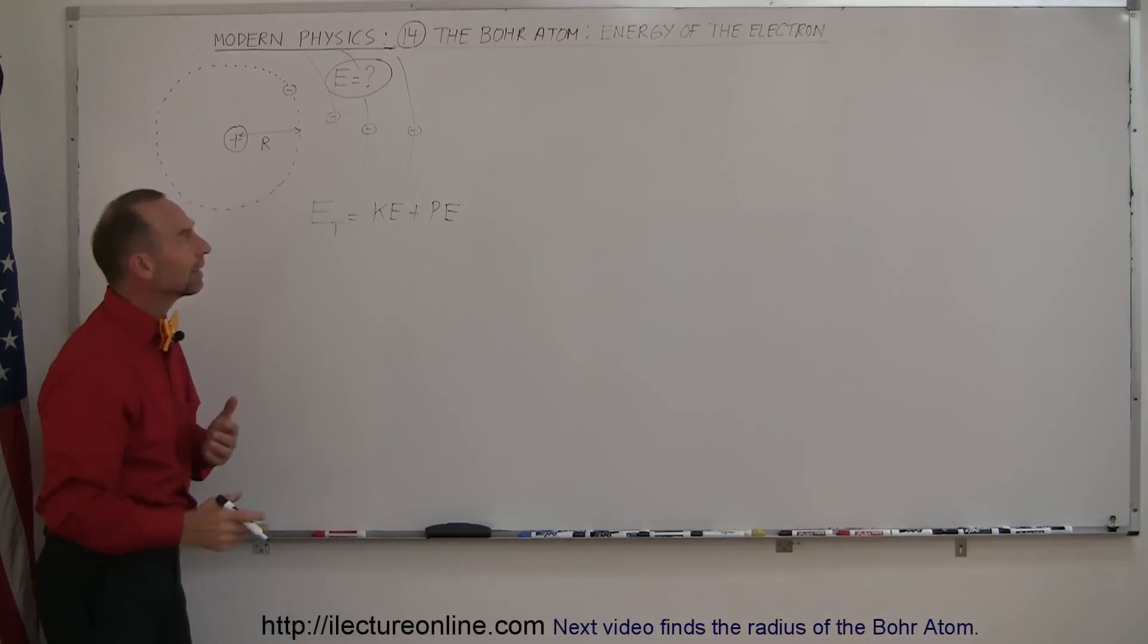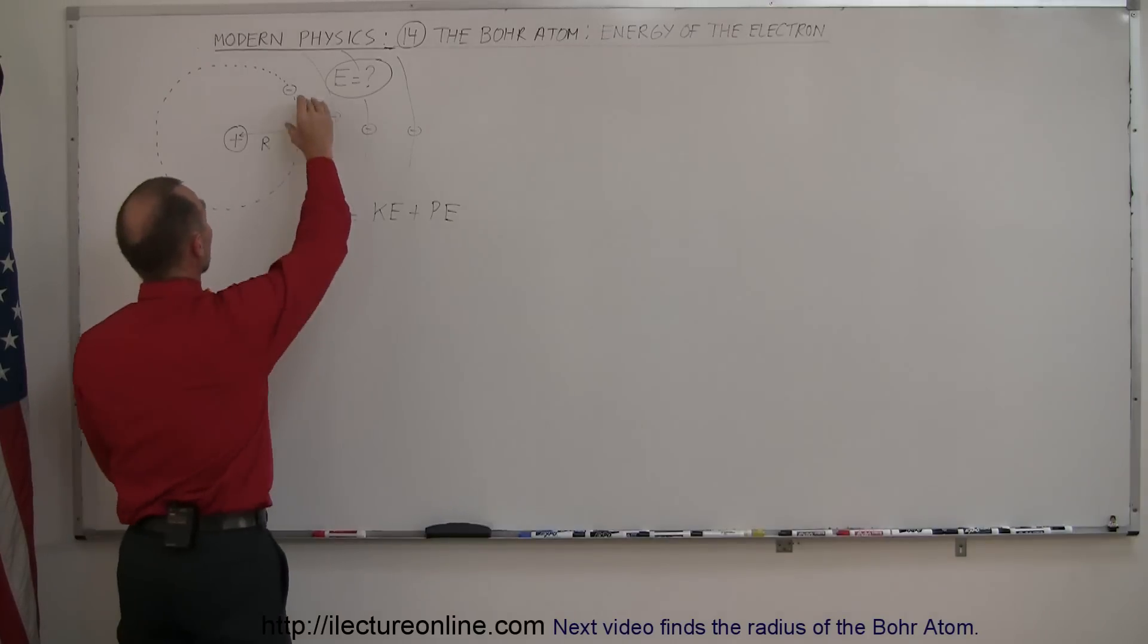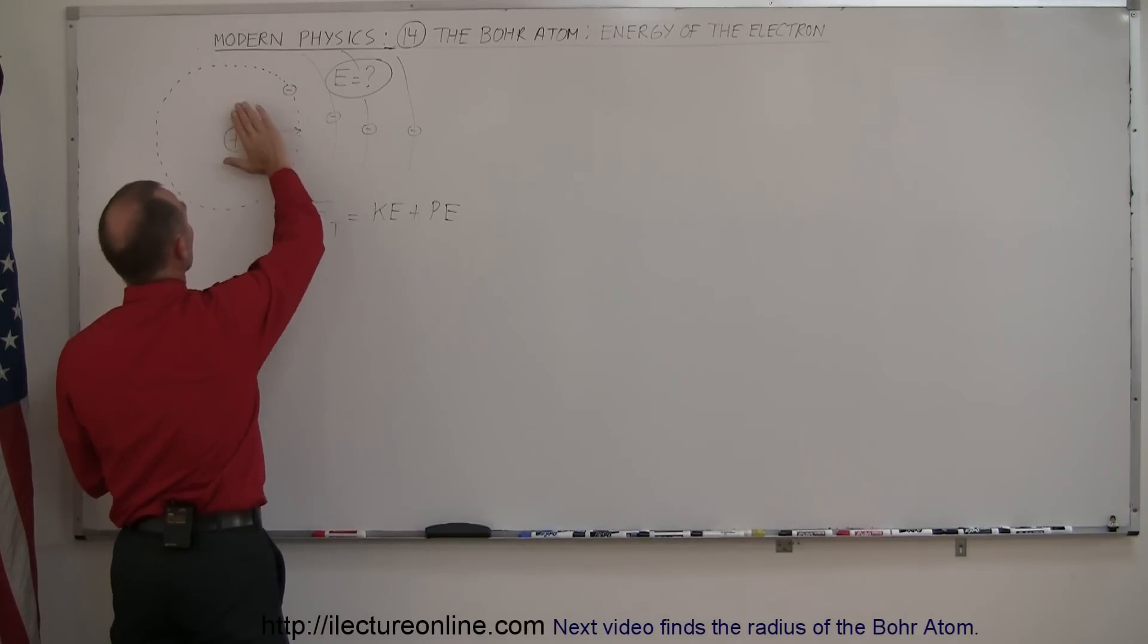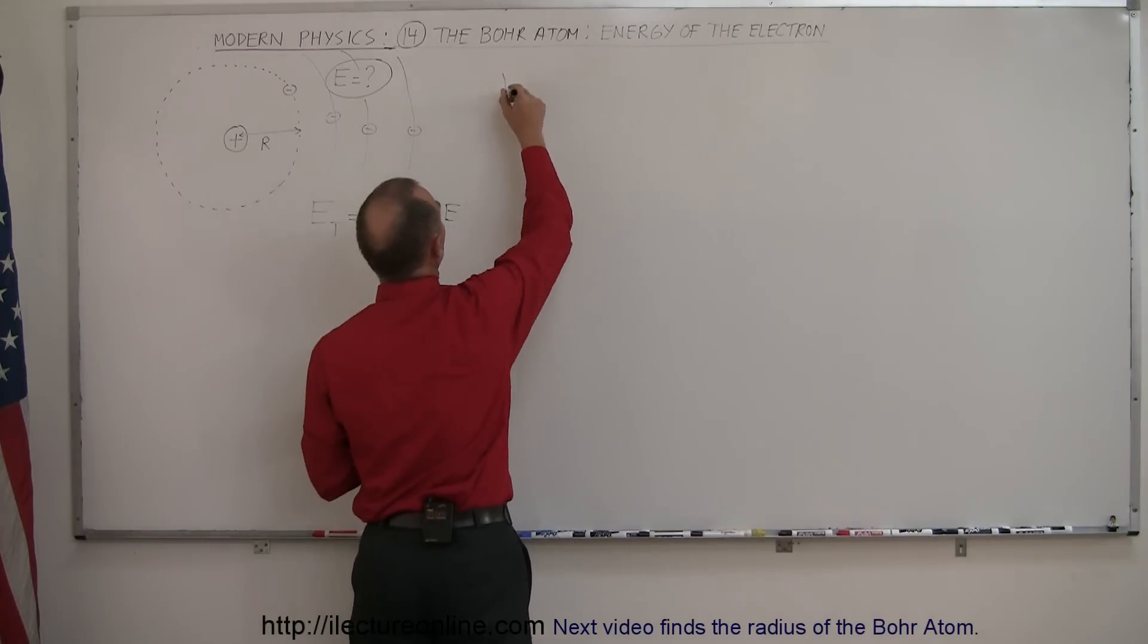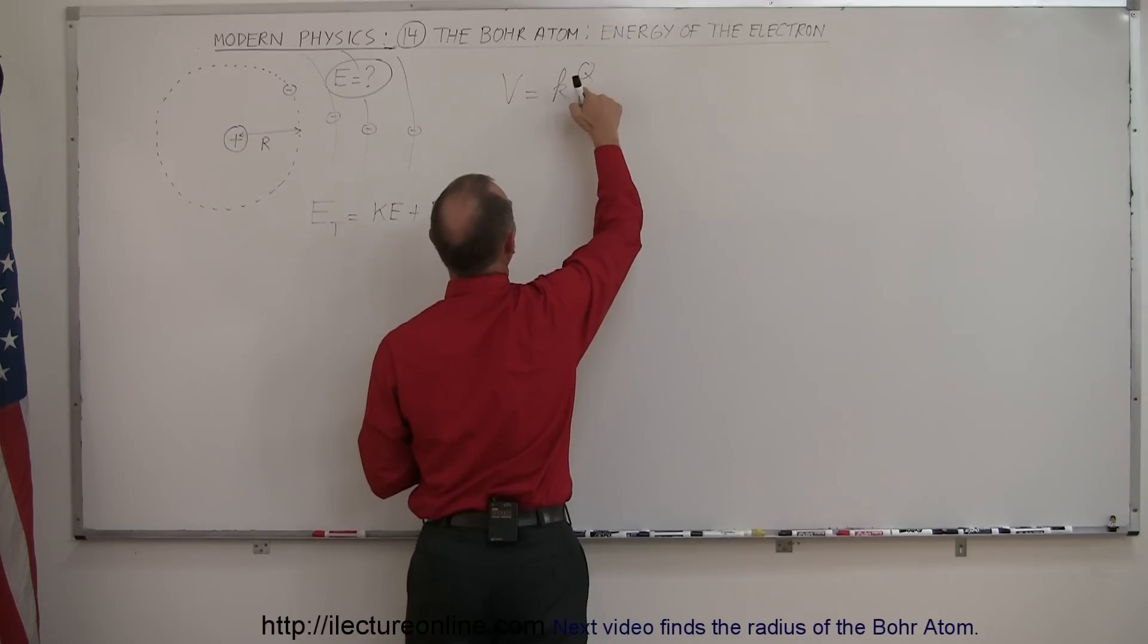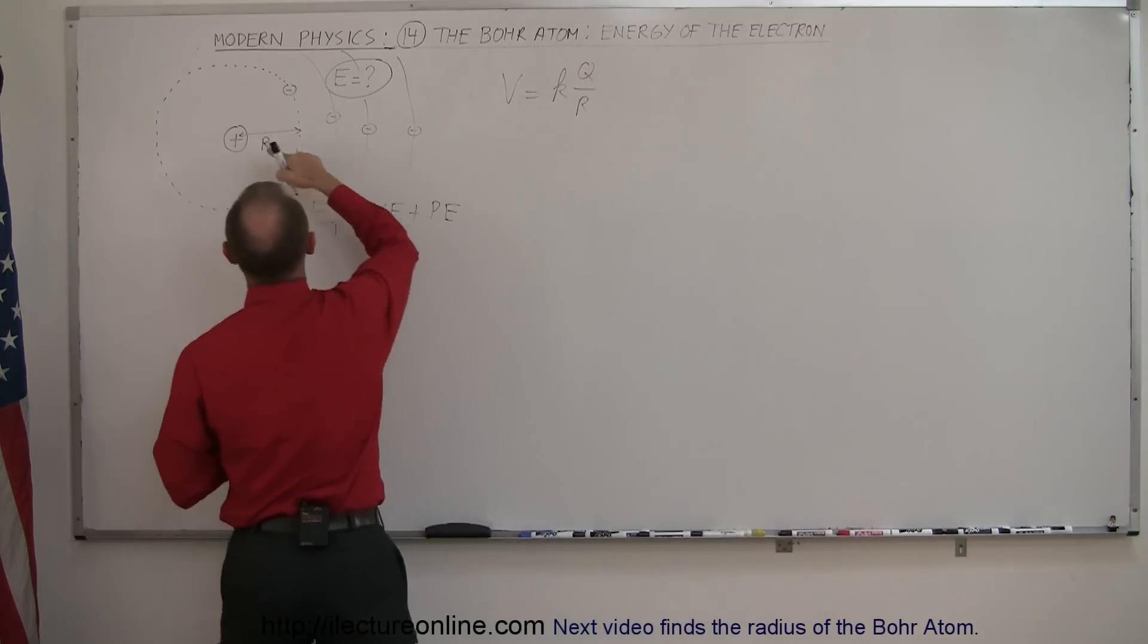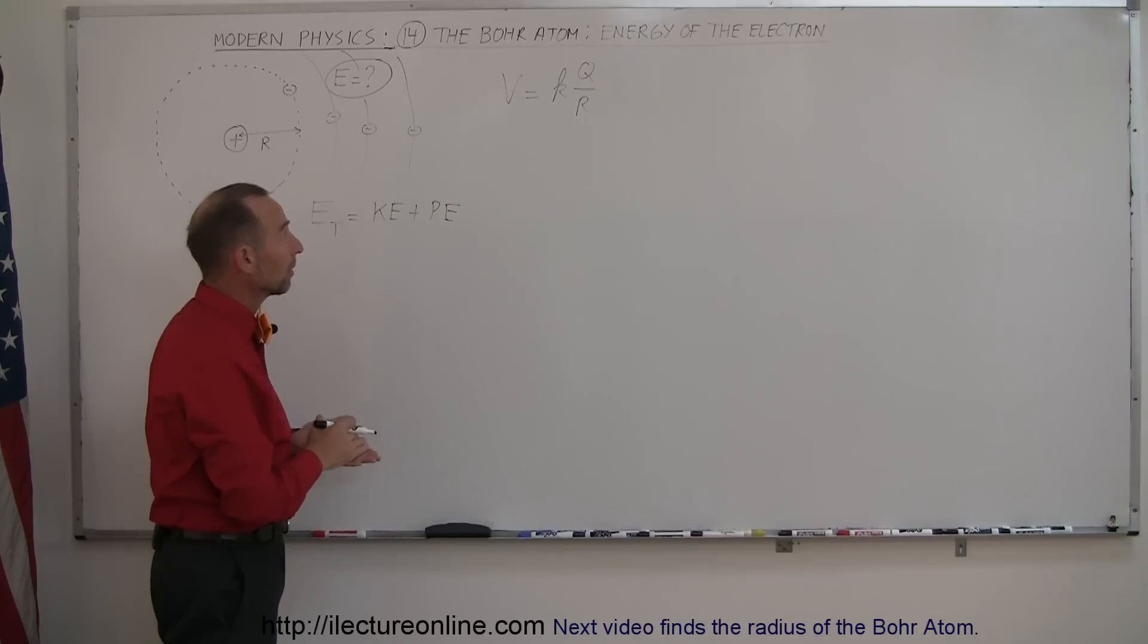Let's first try to figure out how we can find the potential energy. The potential energy would be caused by the electron being in the electric field of the proton. At this location there would be a potential, and the potential in volts is equal to K times the charge that caused the potential divided by the distance away from that charge. In this case it would be a distance r away from the proton, and K is 9 times 10 to the 9, the Coulomb constant.